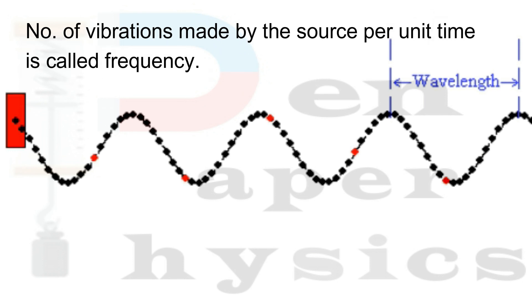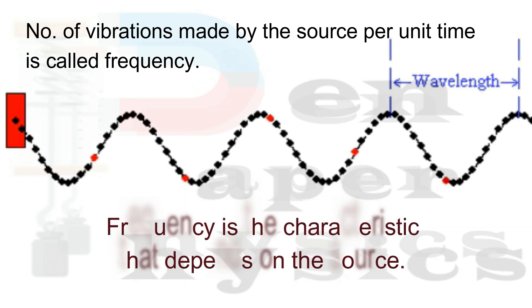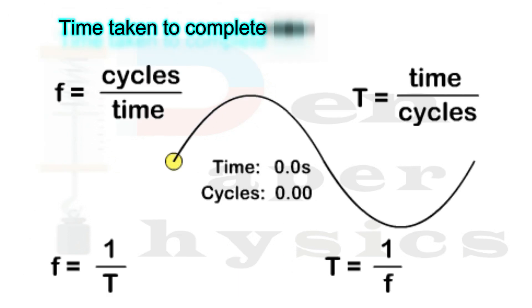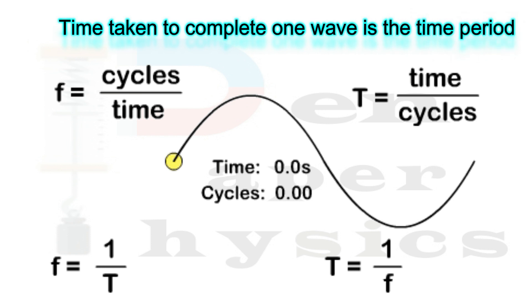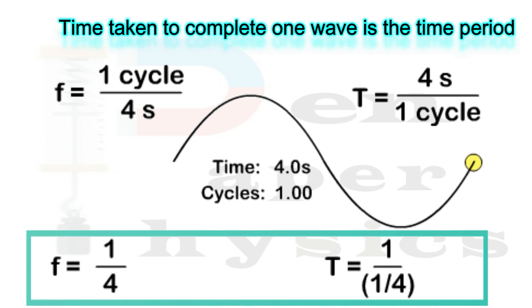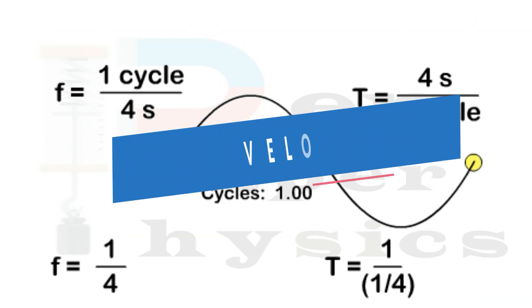Now, what is frequency? The number of vibrations made by a source per unit time is called its frequency. Since frequency is the number of vibrations made by the source in unit time, we can say that it is a characteristic of a wave that depends solely on the source. Next, the time period is basically the time taken to complete one wave. Frequency and time period are reciprocal to each other — for example, if the time taken to complete one cycle is 4 seconds, then frequency is 1/4 and time period is 4.